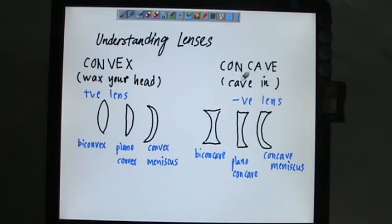As for concave lens, just remember 'the cave' - you go in the cave so it seems like you're going in the cave. This one is biconcave lens, this is plano concave, and this is concave meniscus.